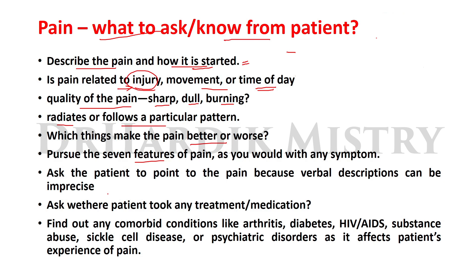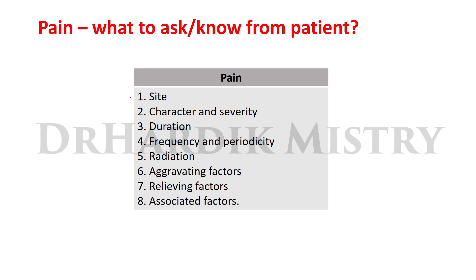Ask the patient to point out the exact location of the pain, because verbal descriptions can be imprecise. Ask whether the patient took any treatment or medication before coming to your clinic. Also identify comorbid conditions such as arthritis, diabetes, HIV/AIDS, substance abuse, sickle cell disease, or psychiatric disorders, as these can affect the patient's experience of pain. When taking a pain history, note the site, character, severity, duration, frequency, periodicity, radiation, aggravating factors, relieving factors, and any associated features.